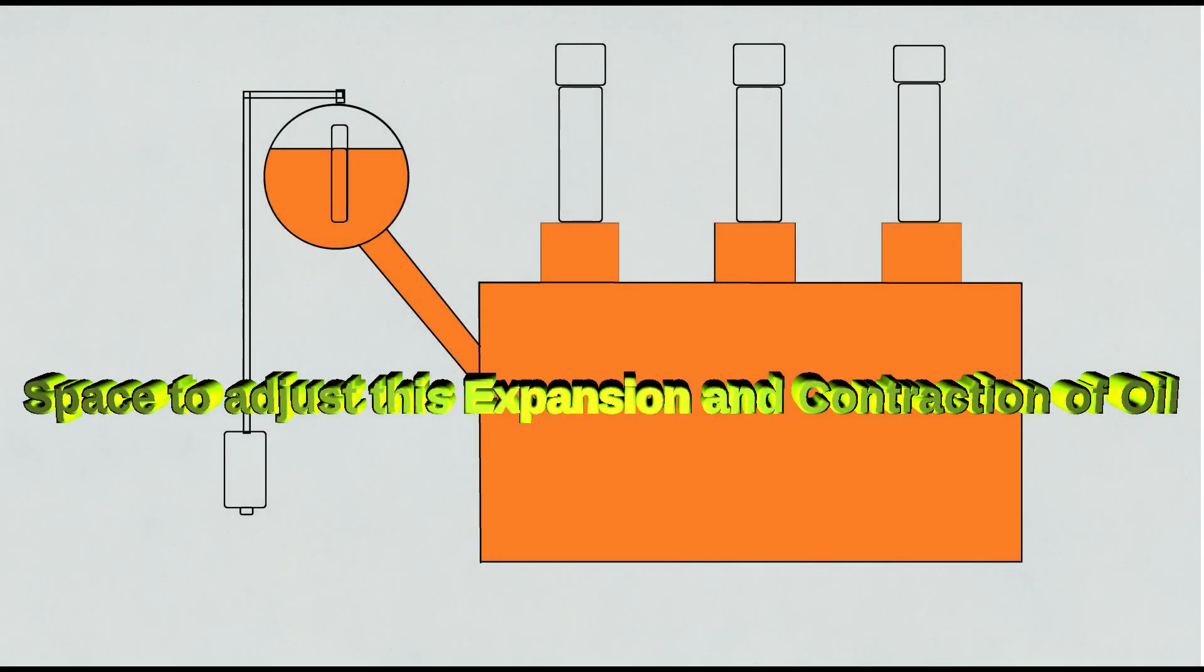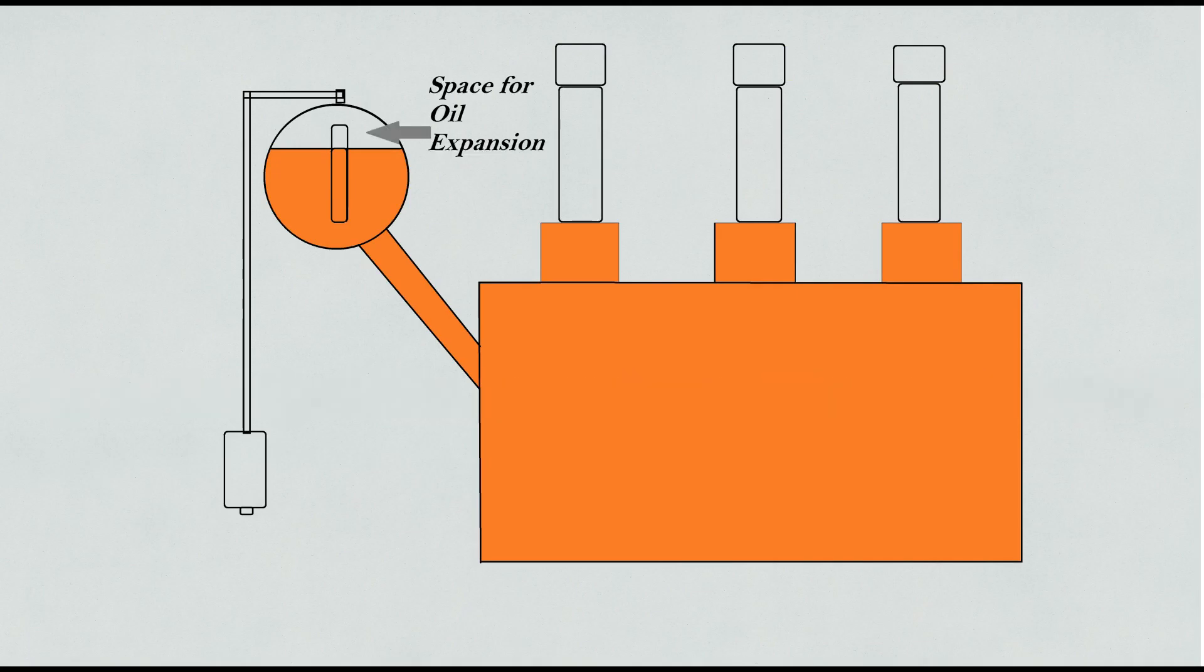Hence an outlet and space is required to adjust this expansion and contraction of oil. So to accommodate expansion, space is provided in the oil conservator tank, and an outlet is provided through the breather.